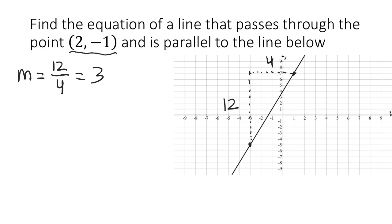The line that we're looking for is parallel, and therefore it must also have a slope of 3. Now we're in a position to find the equation because we have a slope and we have a point. So let's use the point-slope form. y equals m, which is 3, times x minus x1, which is 2, plus y1, which in this case is going to be minus 1.